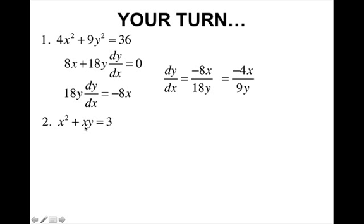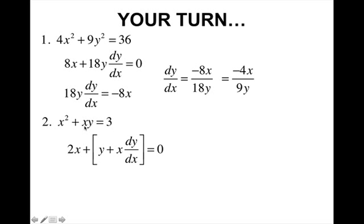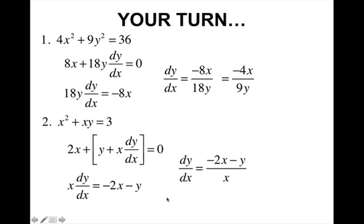For the second problem, we have to apply the product rule when taking the derivative of the xy term. The first term, x squared, has derivative 2x. Applying the product rule to x times y: the derivative of the first term x is 1, times the second term y, gives y; plus the first term x times the derivative of y with respect to x, which is dy/dx; equals the derivative of the constant 3, which is zero. Now solving for dy/dx: subtract 2x and subtract y to the other side, divide by x, and dy/dx is by itself.